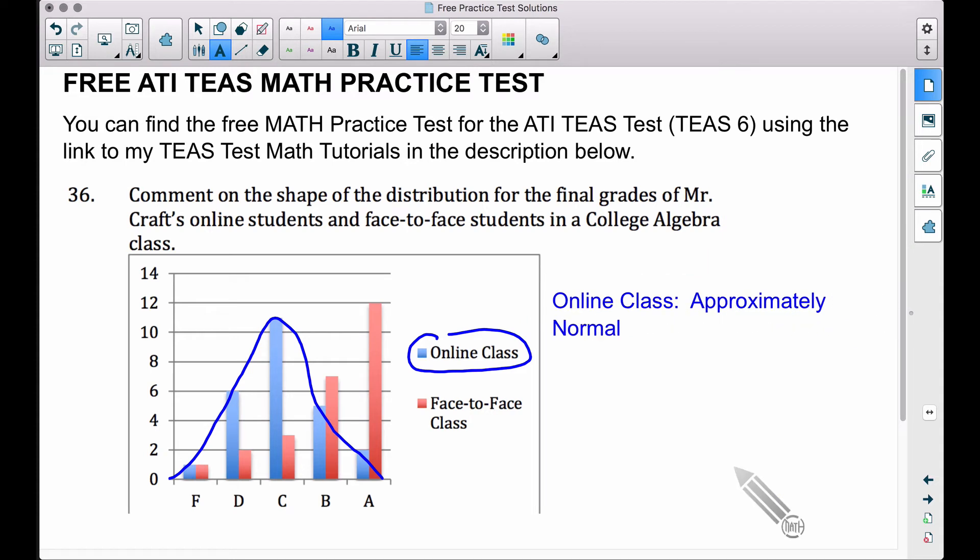Now what changes did I make? Well, if you looked at an old copy of the free ATI TEAS Math Practice Test, I had the A's first, then the B's, C's, D's, and F's. What I did here is technically what I should be doing - starting from smaller numbers to bigger numbers from left to right. So F's, depending on the grading scale, a 10-point grading scale, anything less than a 60 would be here. Anything between 60 and 70 would be a D, 70 and 80 would be a C, a B would be 80 to 90, and an A would be 90 to 100. So smallest to biggest, that's what I changed.